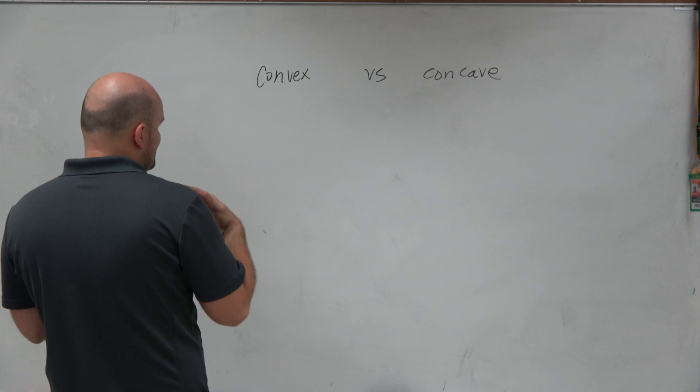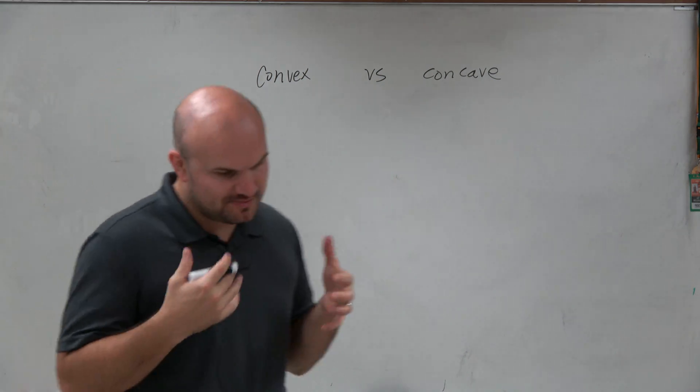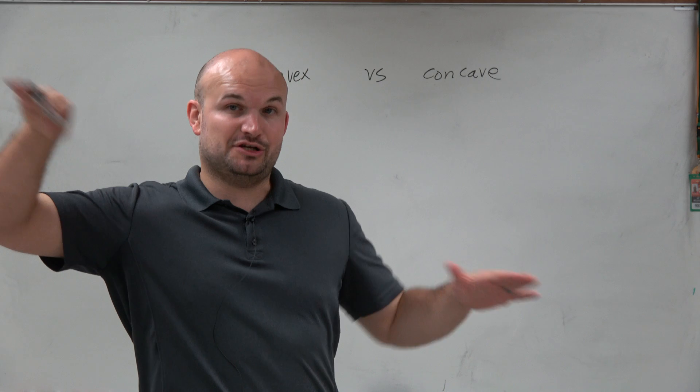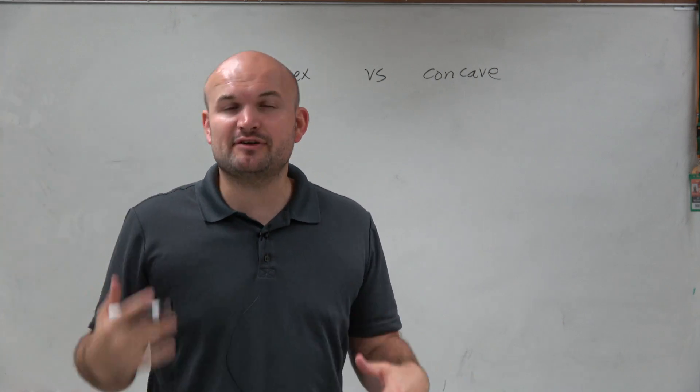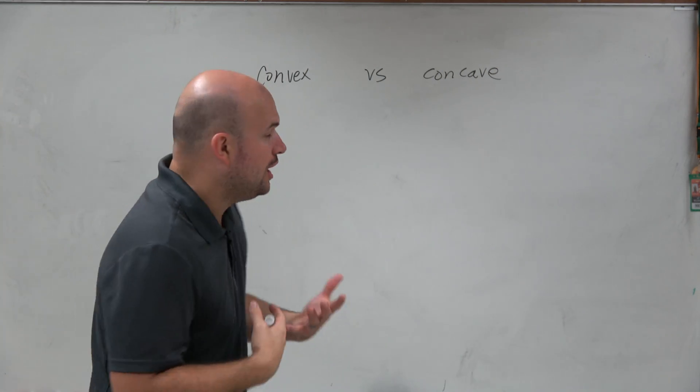The main difference is a convex polygon is a polygon where all of your sides, if you extend your sides, they're never going to cross the interior of your figure.